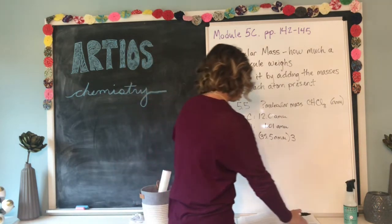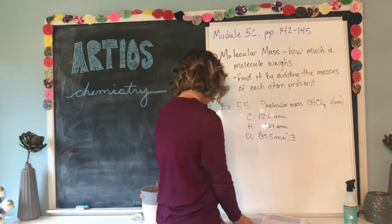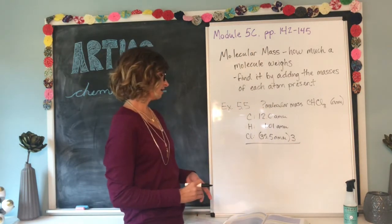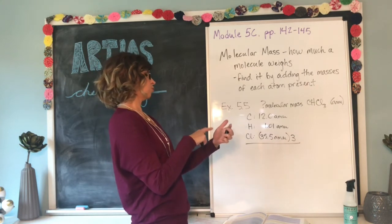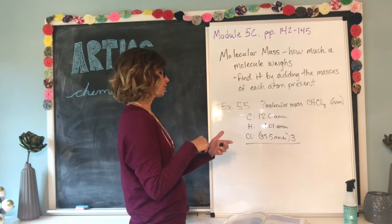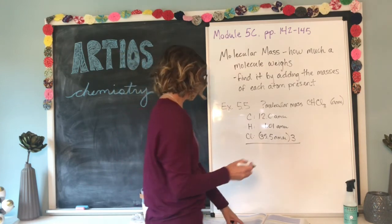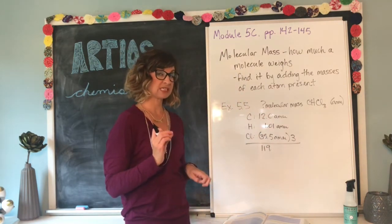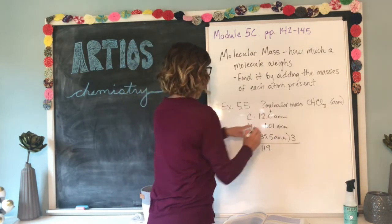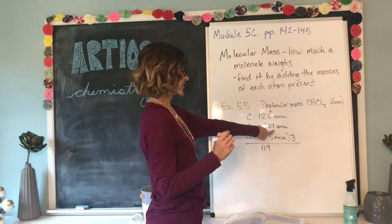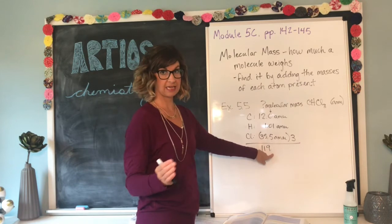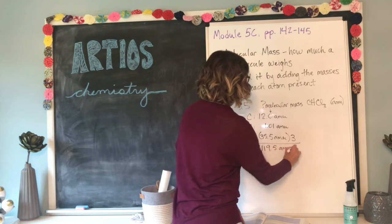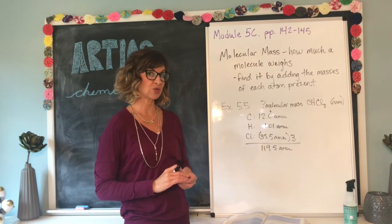So 35.5 times three — we'll add everything up at the same time: 12.0 plus 1.01 plus 35.5 times 3. Now, my answer can only be as precise as my least precise measurement. This one goes to the tenths place, this goes to the hundredths place, and this only goes to the tenths place, so my answer will end in the tenths decimal place. The answer is 119.5 AMUs — that is how much a CHCl3 molecule weighs.